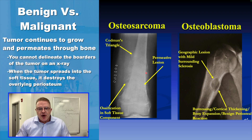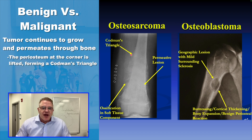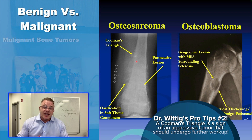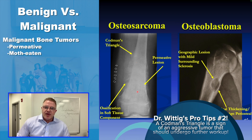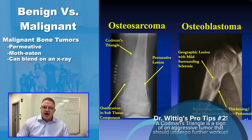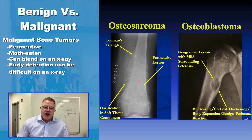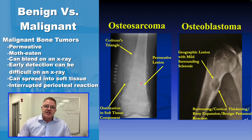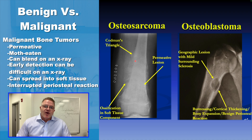When the tumor spreads to the outside of the bone and creates a soft tissue mass, it destroys the periosteum directly overlying it, but lifts up the periosteum at the perimeter — and you get what's called a Codman's triangle. Malignant bone tumors are permeative and moth-eaten, and they blend imperceptibly with the surrounding bone. If caught very early, they can be very difficult to pick up on a plain x-ray. They spread into the soft tissues — 95% of conventional osteosarcomas create a soft tissue mass — and they create interrupted periosteal reactions, which is a very worrisome sign.